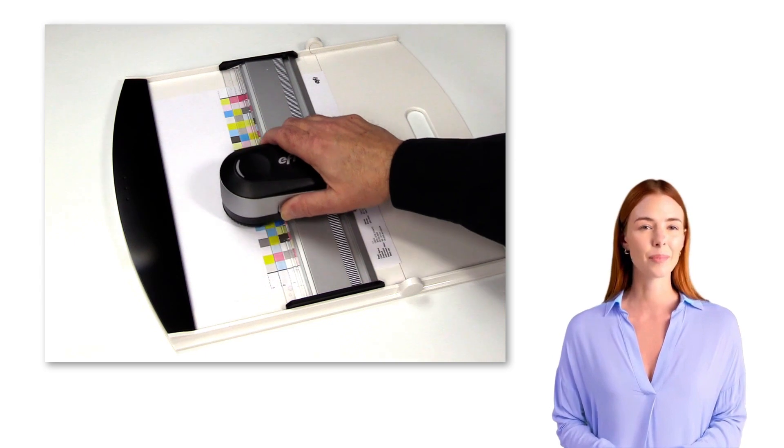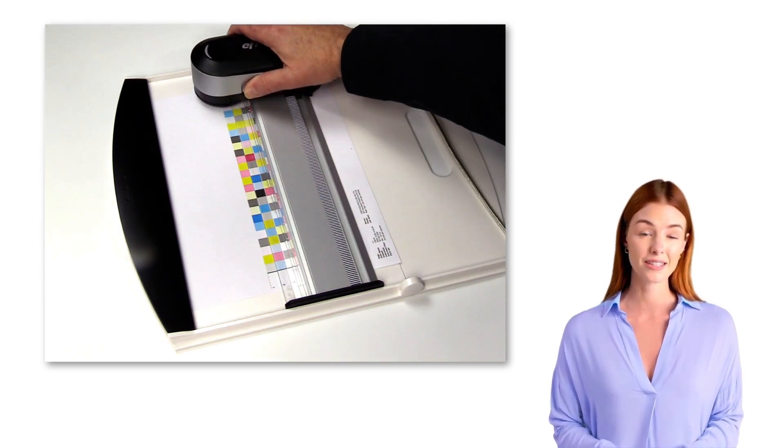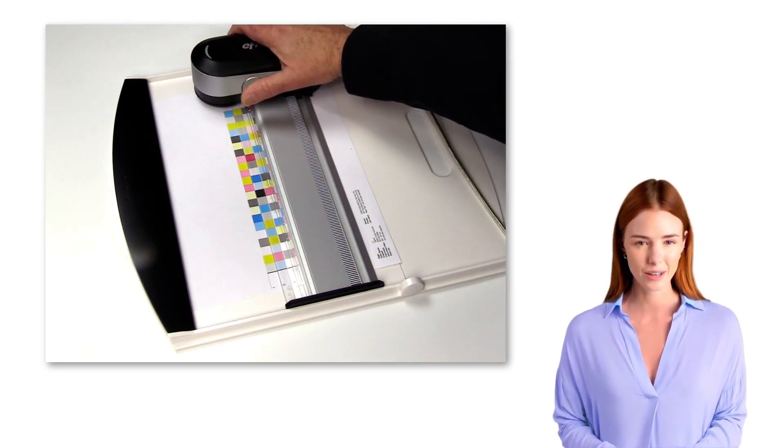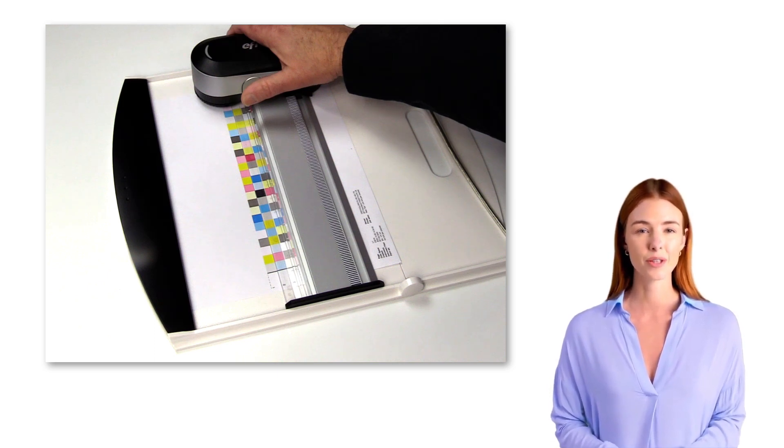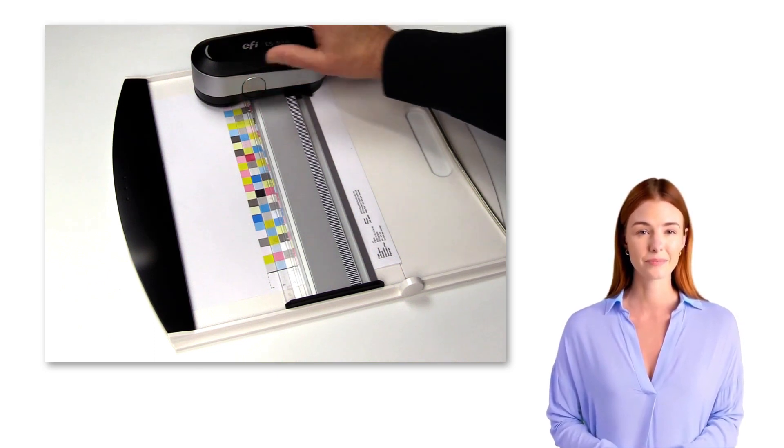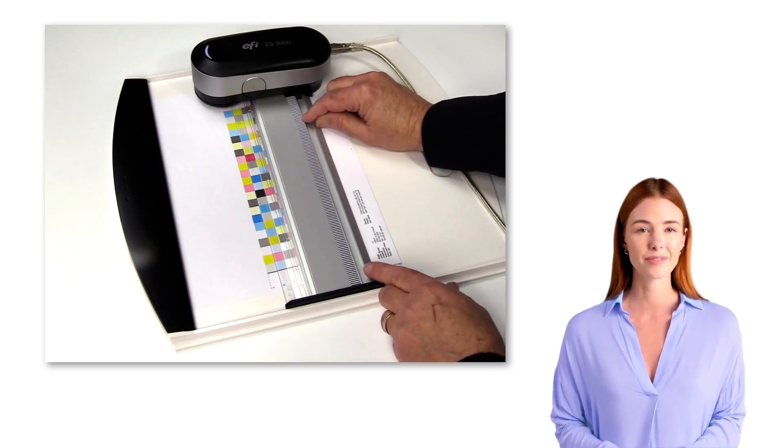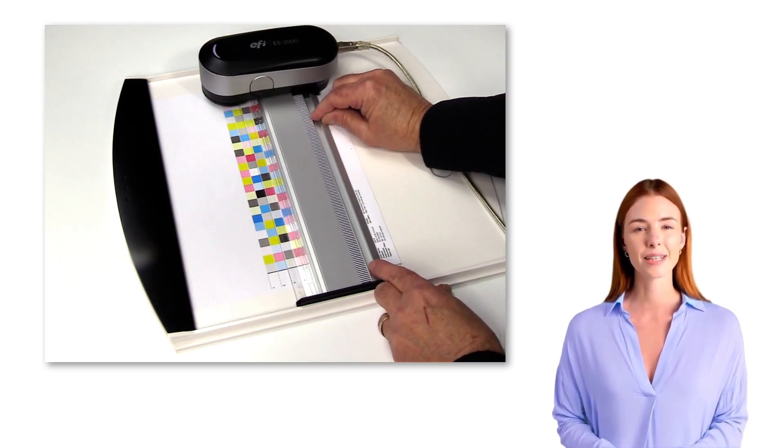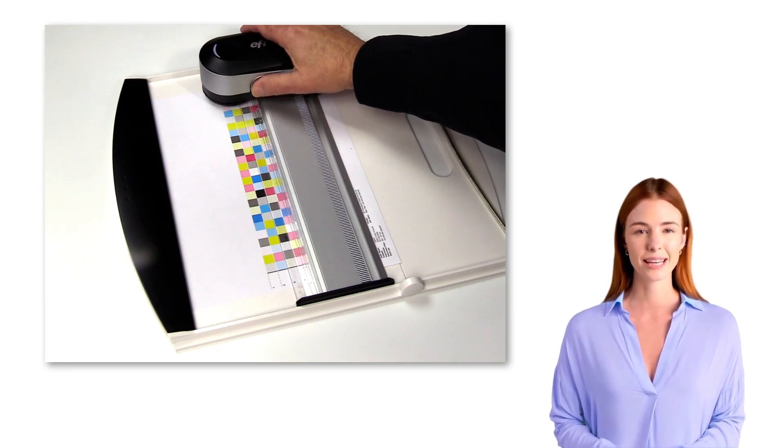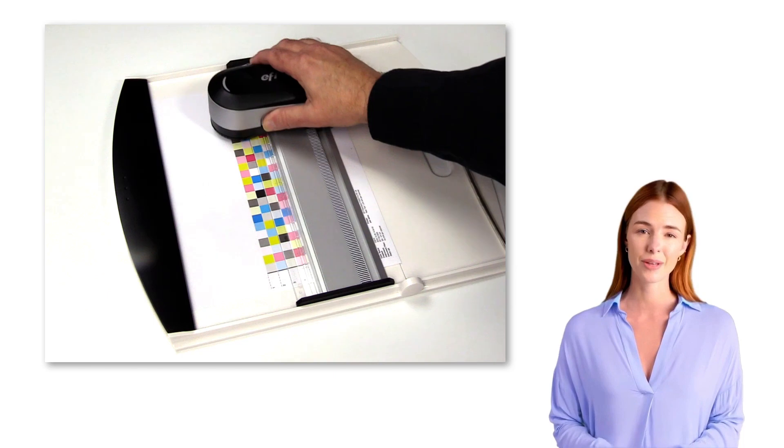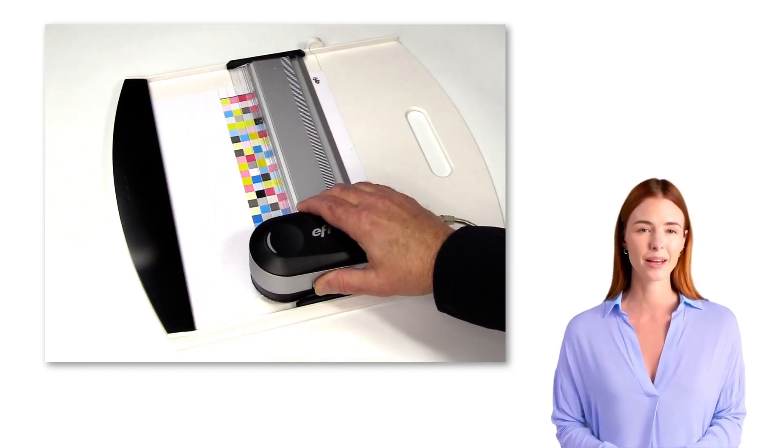With your hand still held lightly on top of the instrument and while still holding the button, move the instrument to the opposite side of the row. It is important that you move the instrument at a steady pace. The ES3000 takes multiple measurements as it passes through each patch, then averages these measurements together to obtain the final measured value. This helps to average out any minor printed defects in any patch.